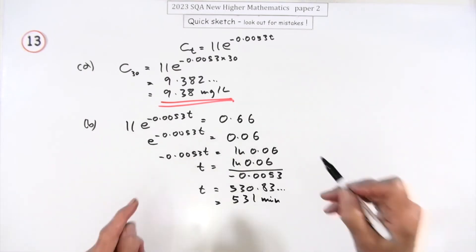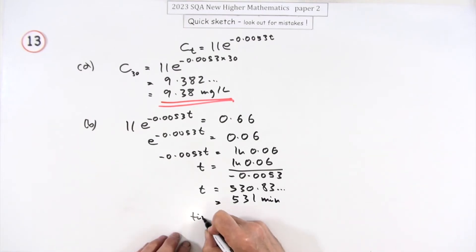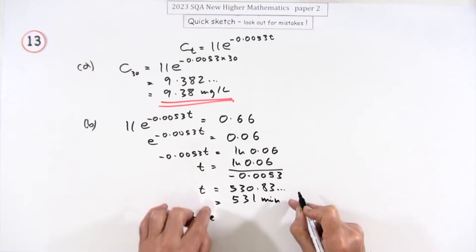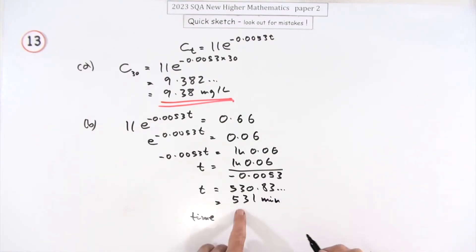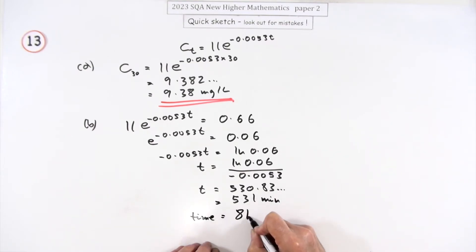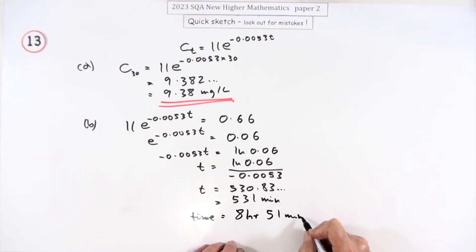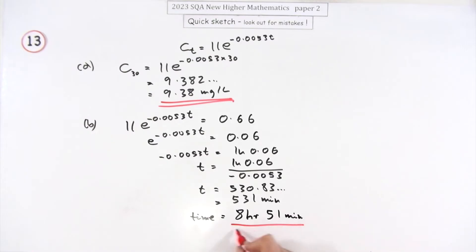If the question just says find the time rather than find t, you could also convert: 6 times 80 is 480, so that's 8 hours, leaving 51 minutes — so 8 hours and 51 minutes. Either answer would do, but you'd probably just leave it as 531 minutes.